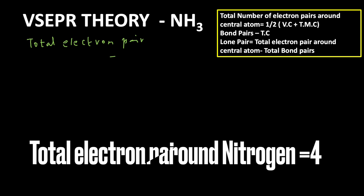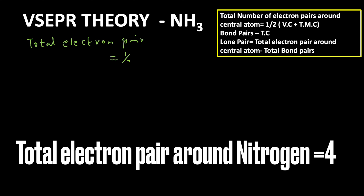Total electron pairs equals half times Vc, the valence electrons of nitrogen. Nitrogen has atomic number 7, so it has 5 valence electrons. There are 3 hydrogen atoms, so: (5 + 3) / 2 = 8 / 2 = 4. So total electron pairs around the central atom is 4.